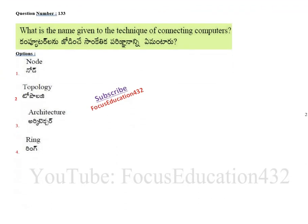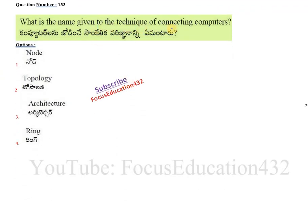Next question: what is the name given to the technique of connecting computers? There are different models in which computers are connected. The correct answer is topology. We have star topology, bus topology, and different types of models in which we connect computers. When different computers are connected, that is known as a network, and the different ways of forming that network are generally called topology.